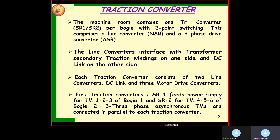The main locomotive component is our traction converter, basically located in the machine room. We know SR1 and SR2 — this is a two-point switching device. There is a line converter, SR, and a 3-phase drive converter, ASR. The line converter is connected to a secondary traction winding on one side, and our DC link on the other side. In each traction converter, there are two line converters, a DC link, and three motor drive converters. SR1 supplies traction motor group 1, 2, 3 and SR2 supplies TM group 4, 5, 6. These three motors are asynchronous type, each connected to one converter.